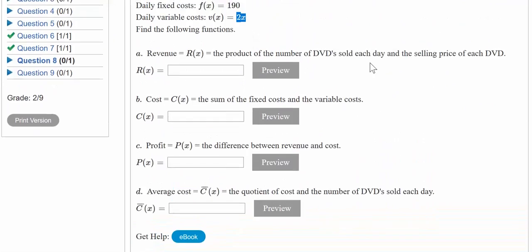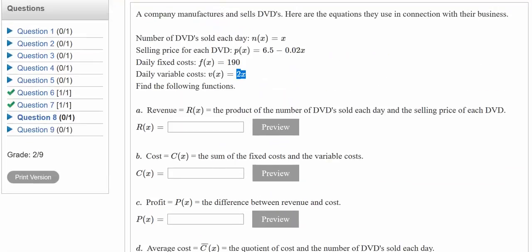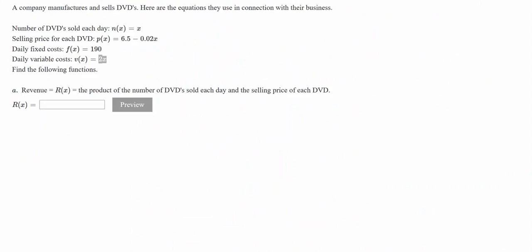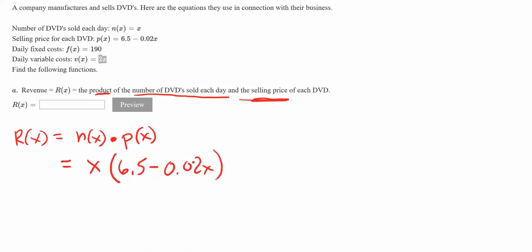Part A is the revenue function. It's the product, so we're multiplying the number of DVDs sold each day and the selling price. We can write this as an equation: n(x) times p(x). In this case, n(x) is just x, and p(x) is 6.5 minus 0.02x. Just distribute this in and we're done.